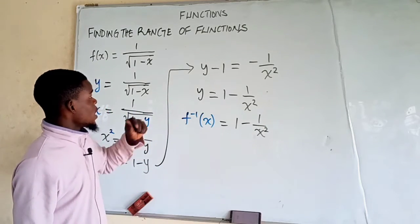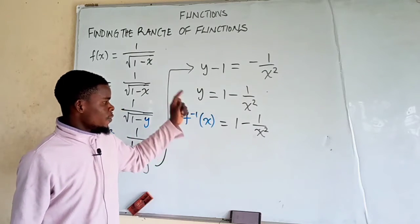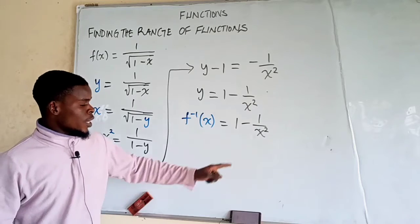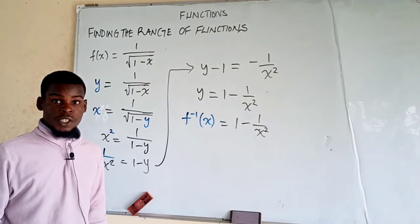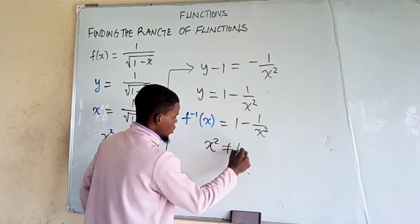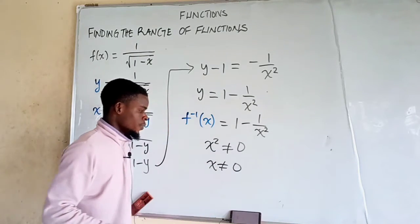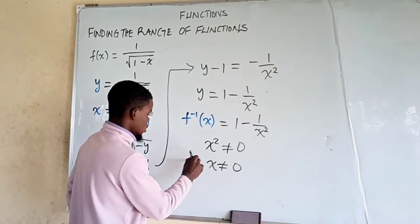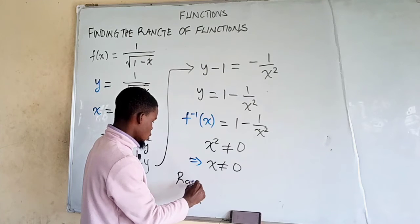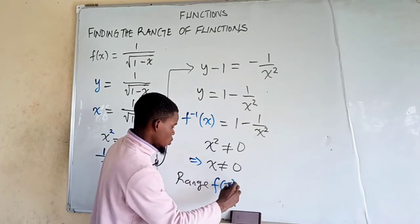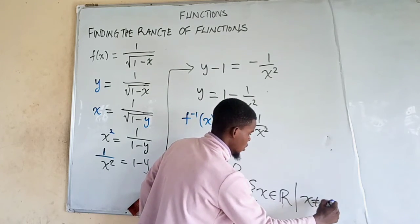Our goal was to find the range of the original function. To do that, we find the domain of the inverse. The domain of f inverse of x = 1 minus 1 over x squared will be all real numbers except 0, since this rational term is undefined when x squared equals 0. Since x squared equals 0 only when x equals 0, we exclude x equals 0. Therefore, the range of the original function f(x) is all real numbers except 0.